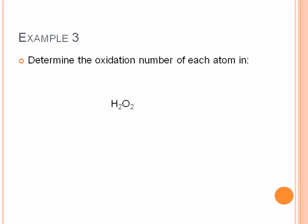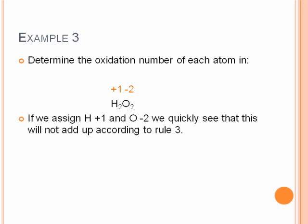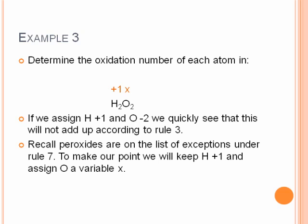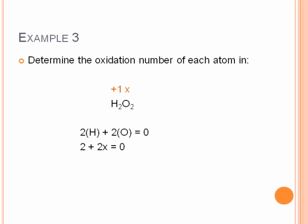Let's look at hydrogen peroxide, one of our exceptions. If we apply the standard rules — hydrogen plus one and oxygen negative two — it won't add up to zero. So we ignore the oxygen rule, keep hydrogen as plus one, and assign oxygen the variable x. Setting the equation equal to zero: 2(+1) + 2x = 0, so 2x = −2, giving x = negative one. That's exactly the exception we stated.